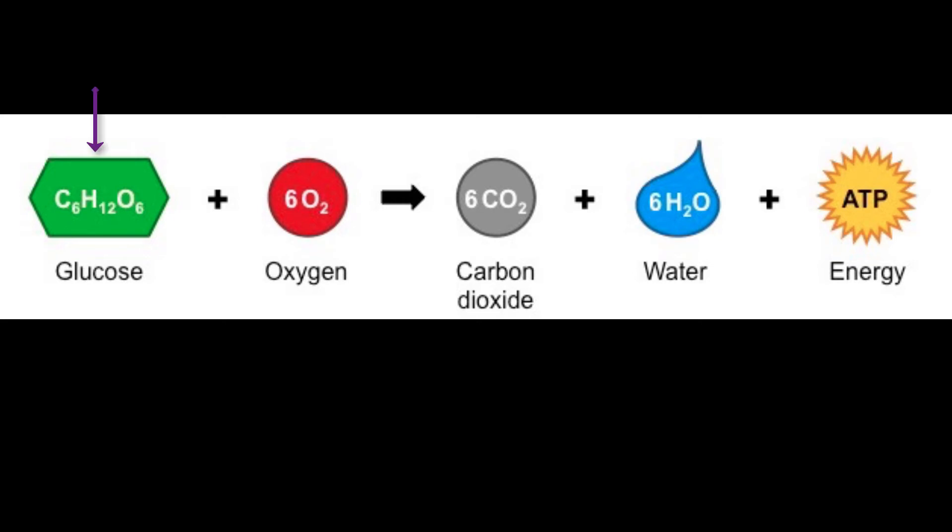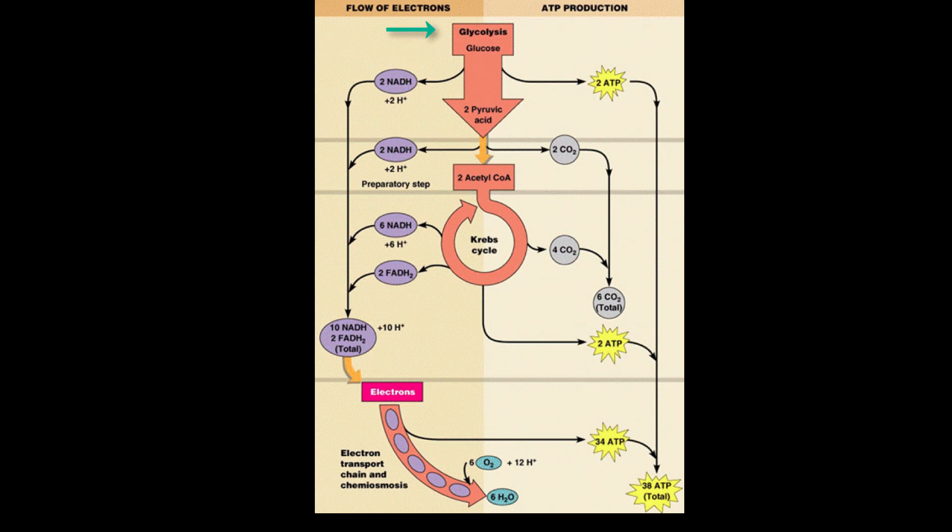Our equation starts with glucose. Glucose feeds into the first step of cellular respiration or aerobic energy production, glycolysis. In glycolysis, we begin to split the glucose molecule open to release the energy and the electrons.